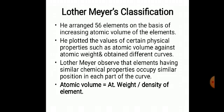According to Lothar Meyer's classification, he arranged 56 elements on the basis of increasing atomic volume of elements. Atomic volume is calculated by dividing atomic weight by density. So we can see the atomic volume of elements this way. Lothar Meyer is also known for observing how elements change based on atomic volume.